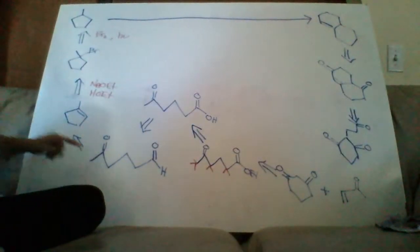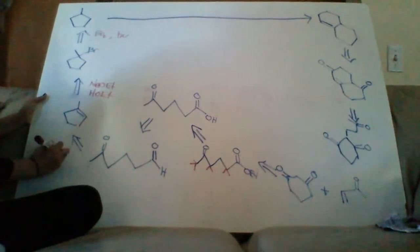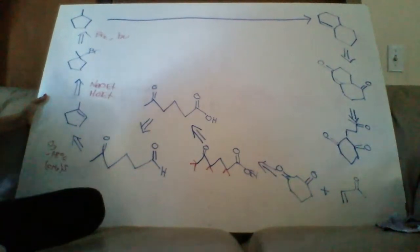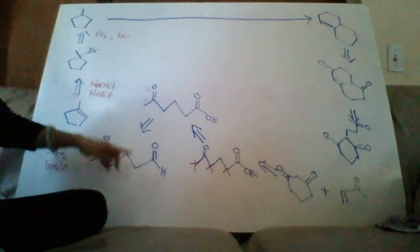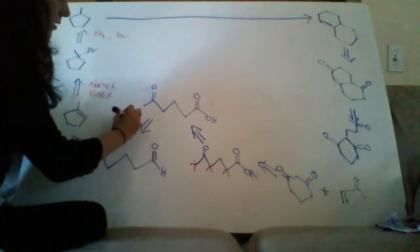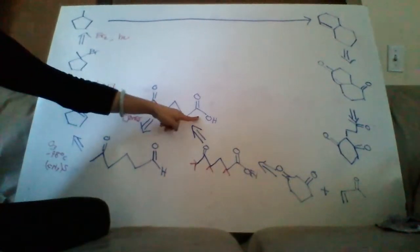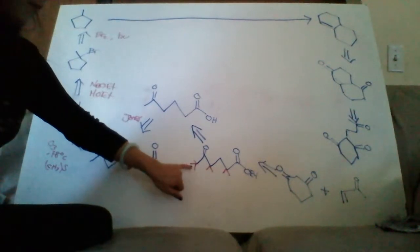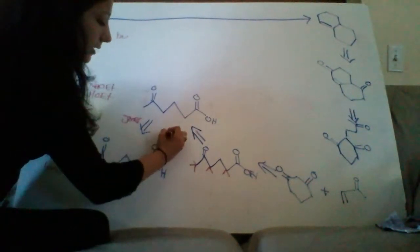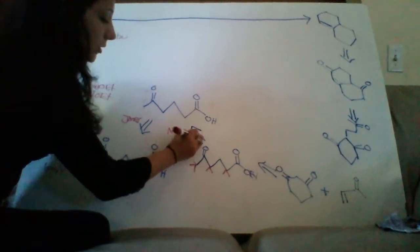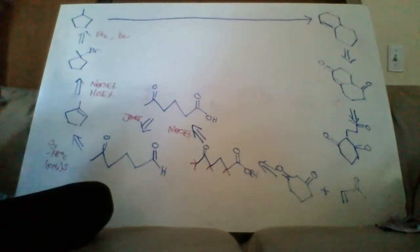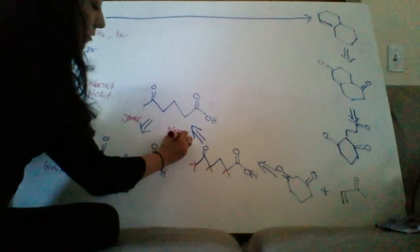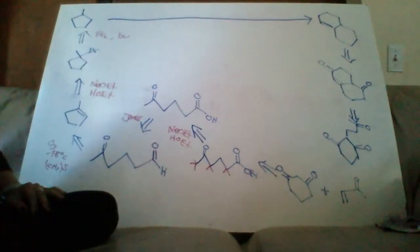From there to do ozonolysis I'm going to use ozone at negative 78 degrees along with DMS. Next we want to use Jones reagent to turn that aldehyde into a carboxylic acid. From there we want to use a base to remove these alpha hydrogens. I'm going to use sodium ethoxide just so that we can avoid doing hydrolysis if I used sodium hydroxide and then I'll go ahead and throw some of that in ethanol.